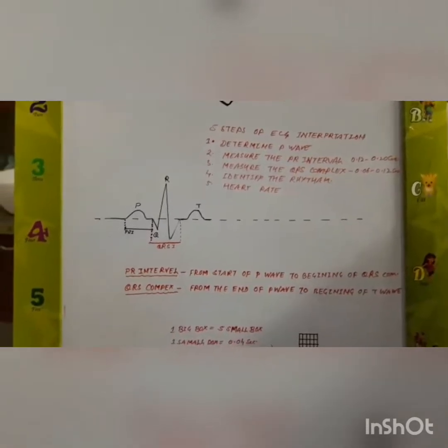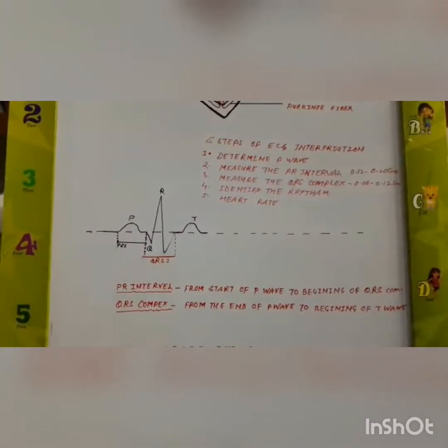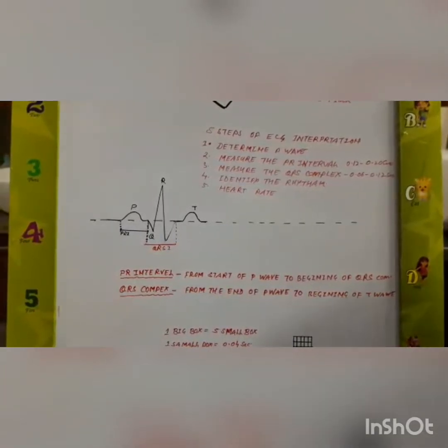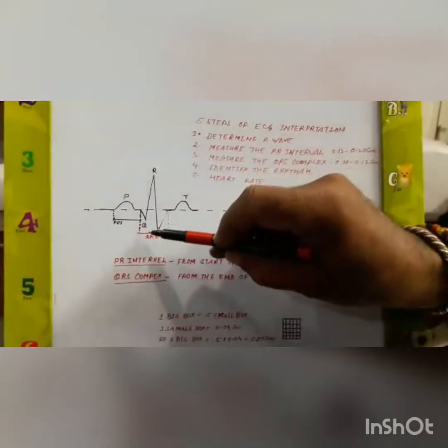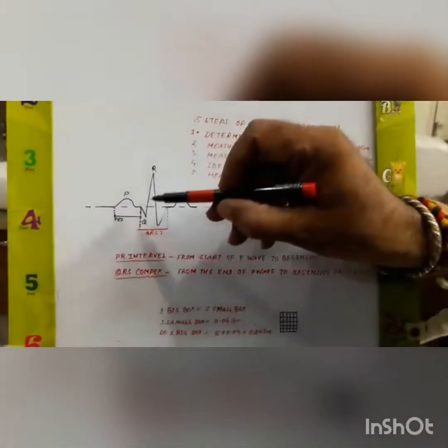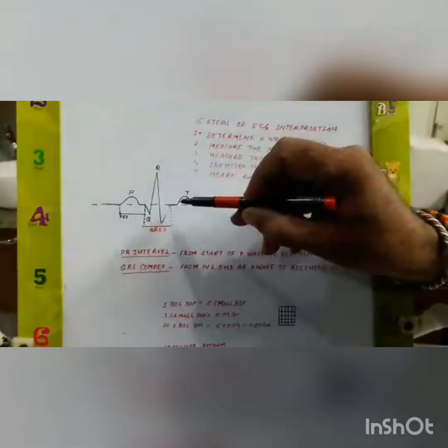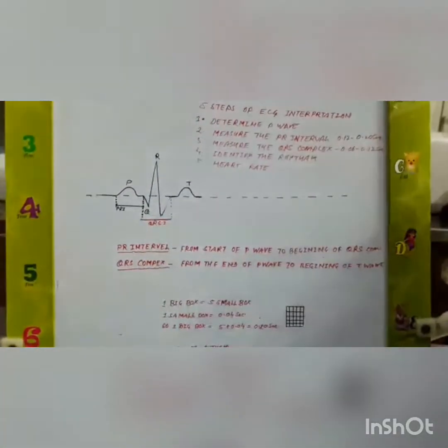Step two: we look at the PR interval. The PR interval is the distance from the beginning of the P wave to the beginning of the QRS complex. This PR interval should be between 0.12 and 0.20 seconds — that means it should not be more than one big box, since one big box equals 0.20 seconds. If it is more than that, it represents a cardiac block.